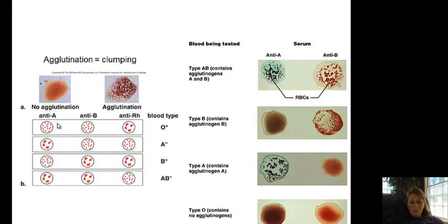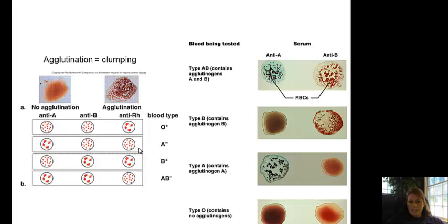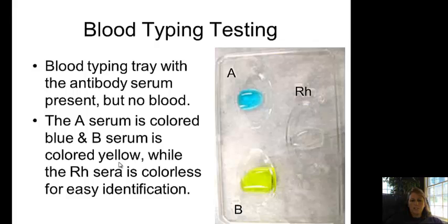This might be helpful when you take notes: a few little dots indicates no clumping, or you can shade it together to represent clumping. Clumping in the RH well means it's positive; no clumping means it's negative. So looking at the first example: no clumping in A, no clumping in B, but clumping in the RH — that means it's O positive. For the next example: clumping in A, not in B, not in the RH — that is A negative. The reading is actually pretty simple: if it clumps, that's what it is. If it clumps in the RH well, it's positive.